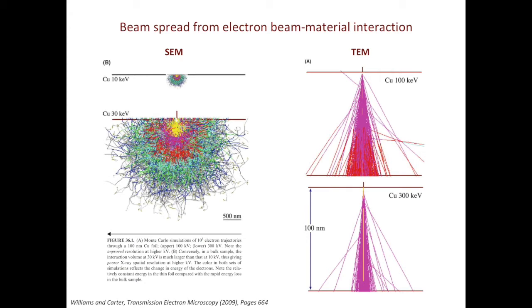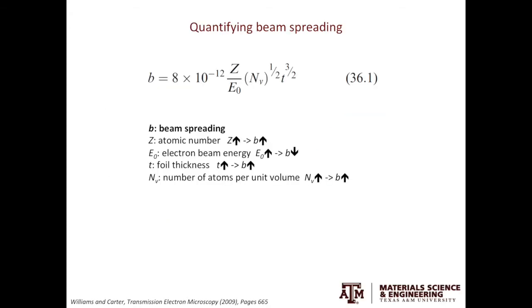Next, let's look at how we can quantify beam spread in TEM. This equation is taken from the textbook. The level of beam spread is a function of Z, the atomic number, E0, the electron beam energy, Nv, the number of atoms per unit volume, and T, the foil thickness.